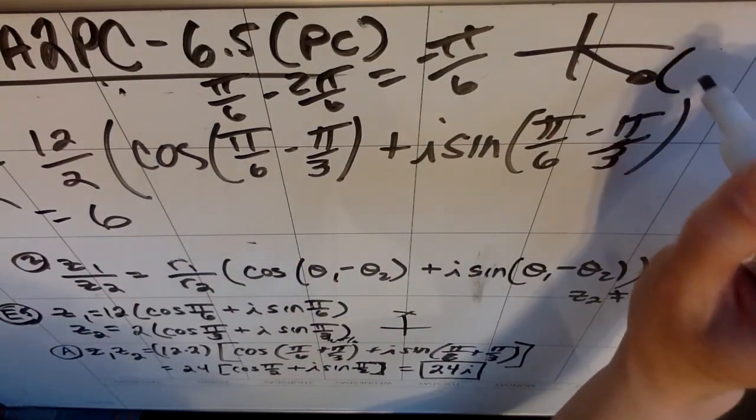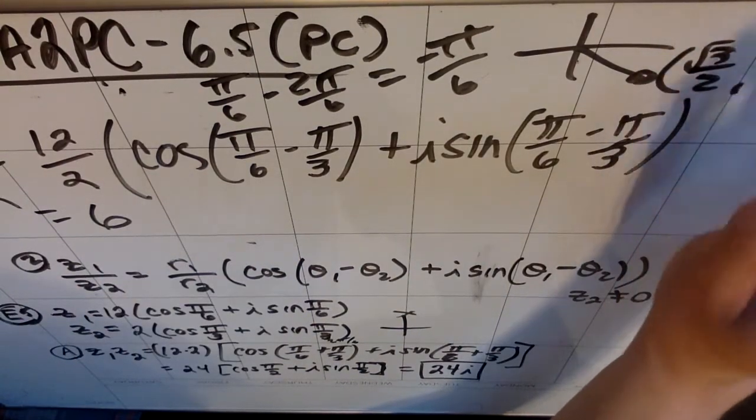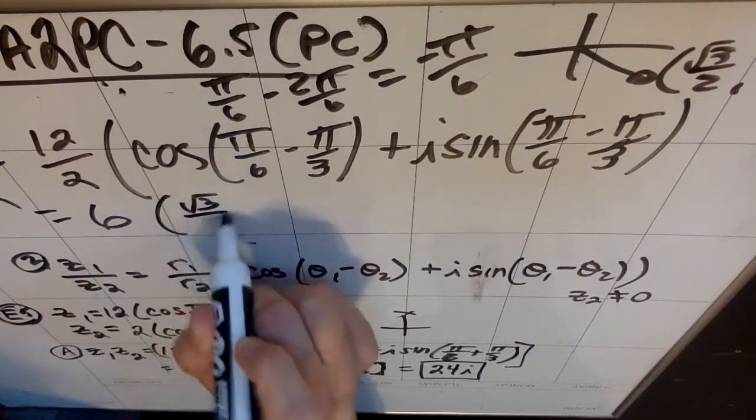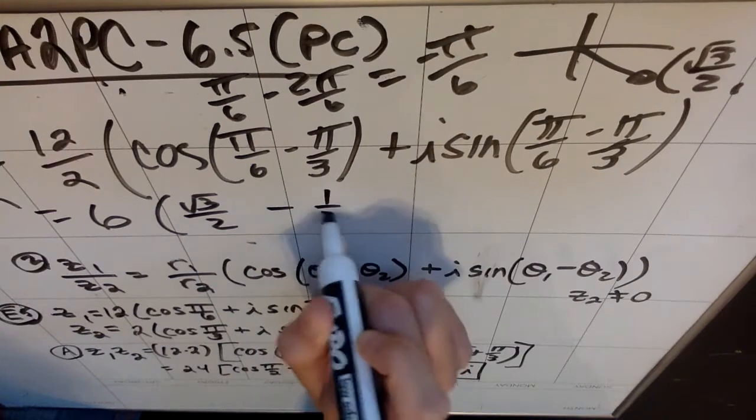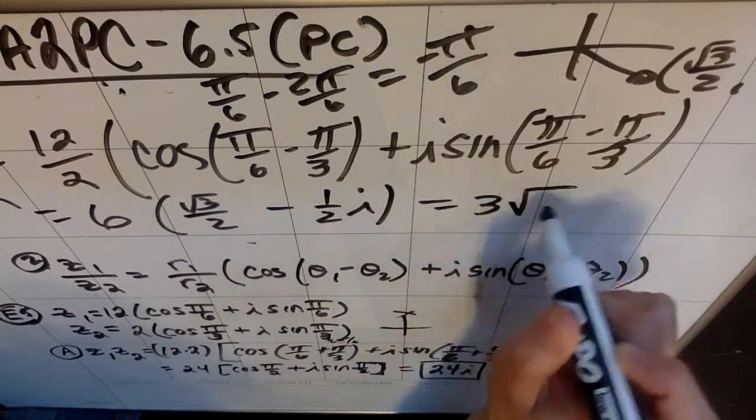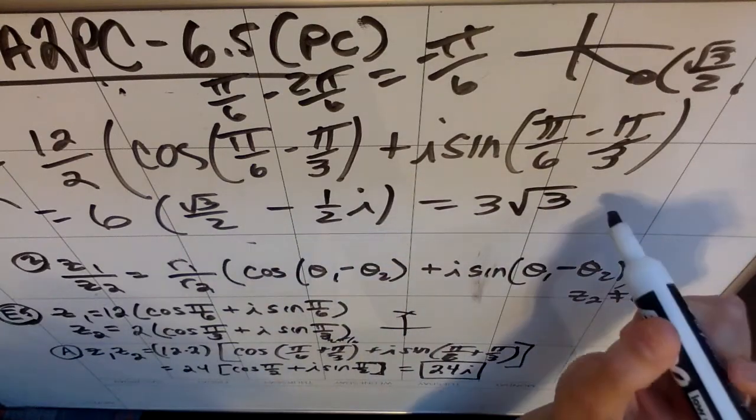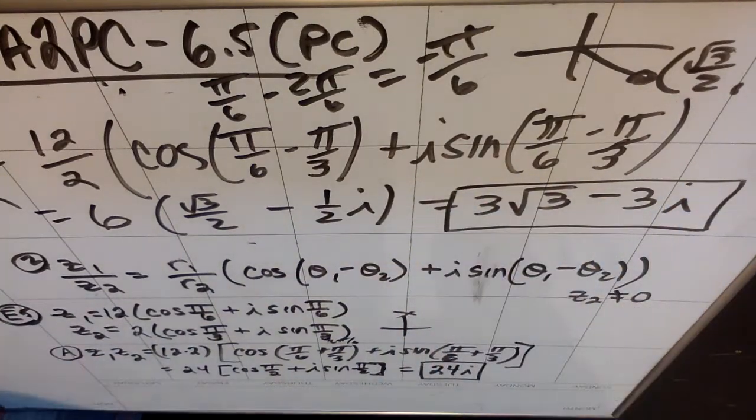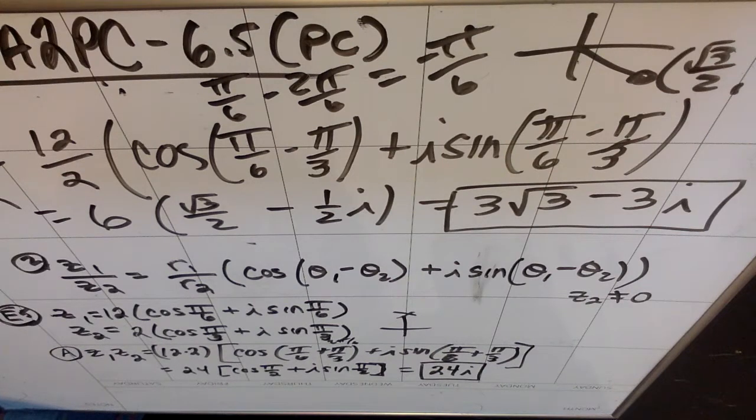So I'm going to get that this is 6 times, at this spot, my cosine is root 3 over 2, but my sine is negative 1 half. So I'm going to get that this is root 3 over 2 minus 1 half i. So when I distribute, I get the answer to be 3 root 3, because the 6 will cancel with the 2, minus 3i. And that's my complex number that I get when I do z1 divided by z2. So that's kind of the gist.